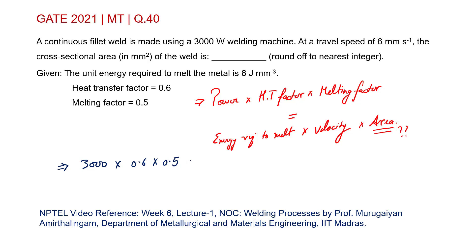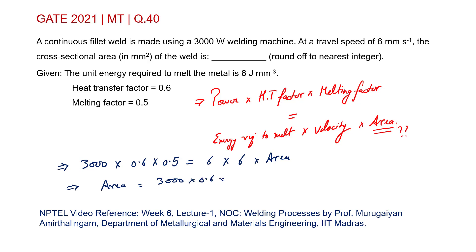Power required is 3000 watts, heat transfer factor is 0.6, melting factor is 0.5, energy required to melt is 6 joules per mm³, and velocity is 6 mm per second. So area equals (3000 × 0.6 × 0.5) divided by (6 × 6). On simplifying, we get approximately 25 mm² as the cross-section area of the weld.